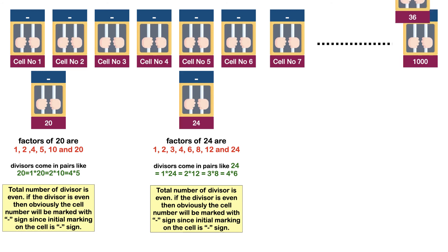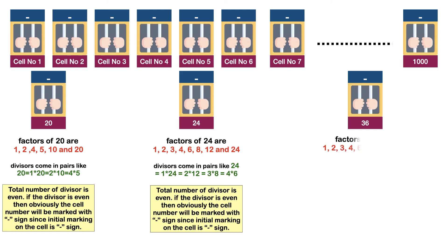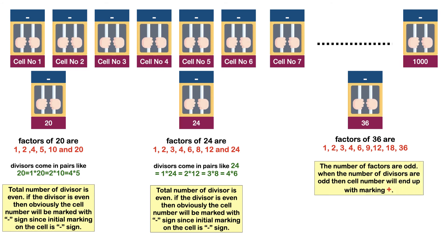For example, 36. Its factors are 1, 2, 3, 4, 6, 9, 12, 18, and 36. Clearly, the number of factors is odd. When the number of divisors is odd, the cell number will end up marked with plus.